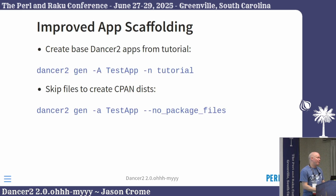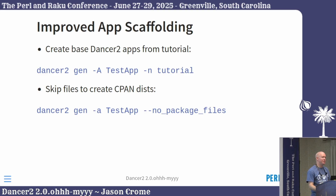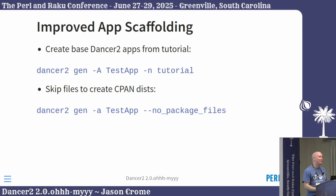We've also got some improved app scaffolding. One of the things people have asked for a lot is to be able to generate a new application based upon the tutorial. You can specify the name of an app skeleton you want to use, and Dancer2 will create a new application based on that. One of my biggest pet peeves was that our default app skeletons created files for publishing your Dancer2 apps to CPAN — in my experience, nobody does that. So we added a command line option to exclude those files when you generate your application. In the spirit of 'there's more than one way to do it,' you can also make your own app skeletons that don't include those.